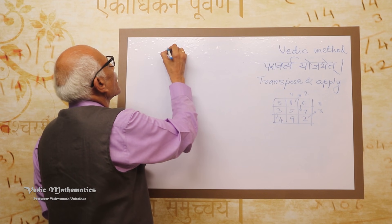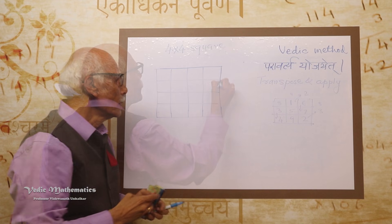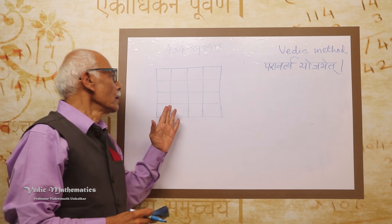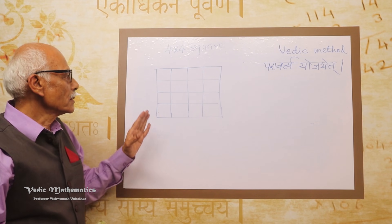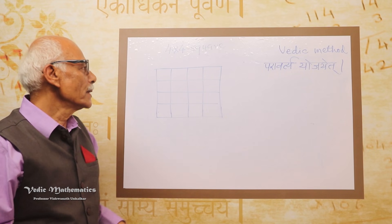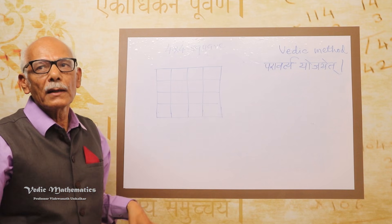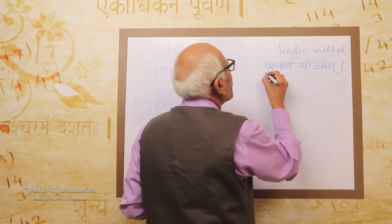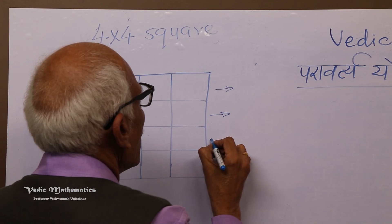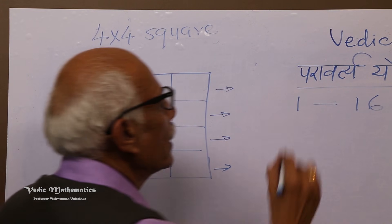Now let us take the example of a 4 by 4 square. A 4 by 4 square has 16 small squares, and we will fill all 16 numbers. The procedure is different here because there is no center square. For odd squares, you can find the center, but for an even square there is no single center cell. All the work will be done inside the square. Here, the meaning of Paravartya Yojaita changes to clockwise and anticlockwise. There are 4 rows, so we bifurcate numbers 1 to 16 into 4 groups.